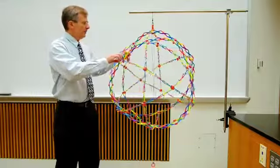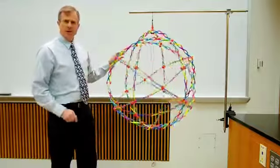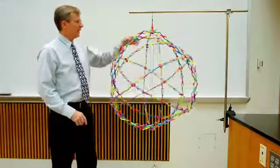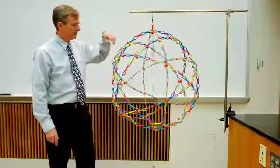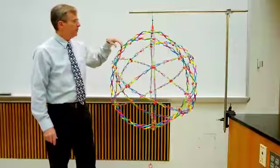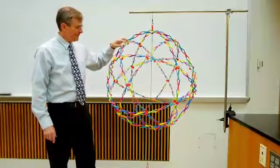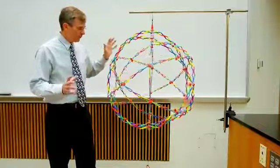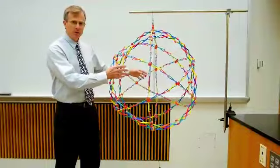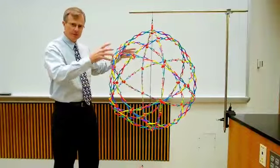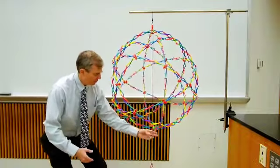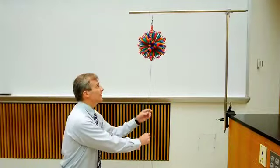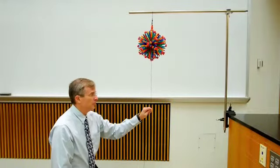I'm going to rotate it about this vertical axis, and that axis is also denoted by the string that passes vertically through the sphere. We will note that the moment of inertia in this expanded configuration is much larger than the moment of inertia in this contracted configuration.